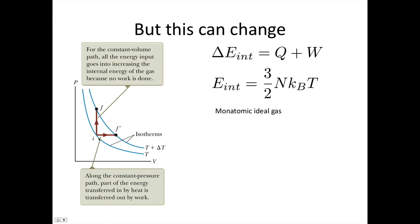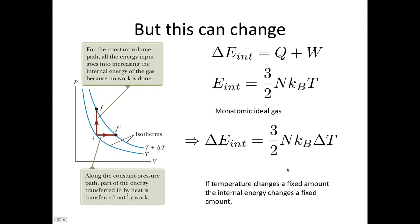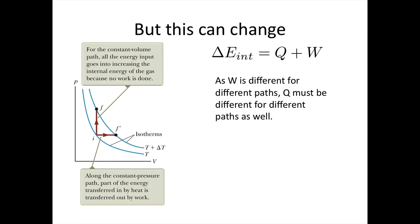So the internal energy of any state is given by, for a monatomic gas, 3 over 2 nkBT. For any gas, we'd have an F here instead of the 3. So the change in internal energy is 3 over 2 nkB delta T. And so if the temperature changes by a fixed amount, the internal energy changes a fixed amount. But the work done is dependent upon the path. So Q is also dependent upon the path.